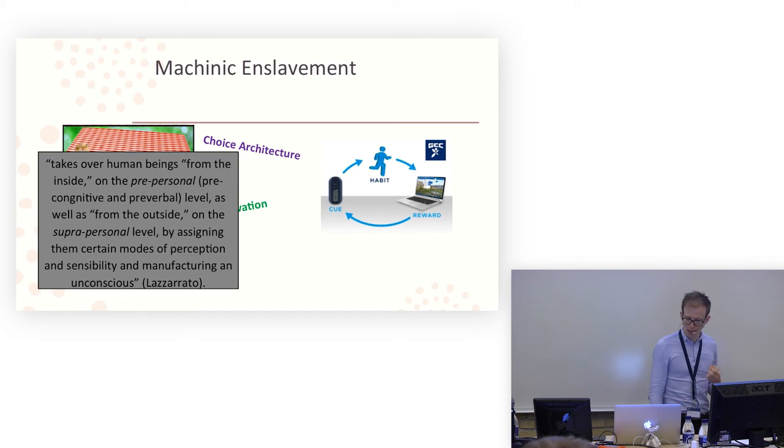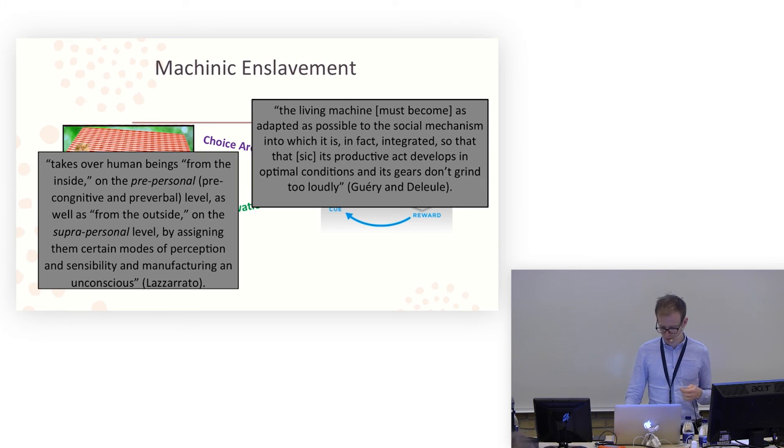So as Lazzarato says, machinic enslavement takes over human beings from the inside, on the pre-personal level, as well as from the outside on the suprapersonal level, kind of the network if you like, by assigning them certain modes of perception and sensibility and manufacturing an unconscious. So it kind of manipulates us on a kind of an almost pre-conscious level, pushes us and nudges us into being more entrepreneurial, more productive, and more engaged in those networks. And that's the kind of the quote I started with. This is about integrating the living machine as much as possible into the productive, into kind of the capitalist machinery. So the gears don't grind too loudly. So we're smoothly integrated with systems of capitalist production.